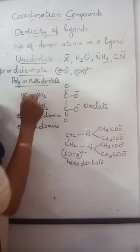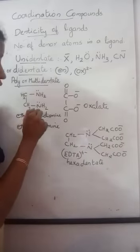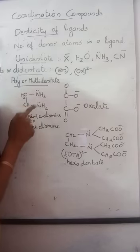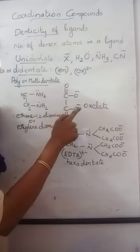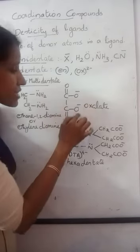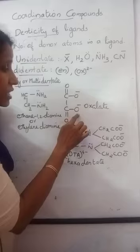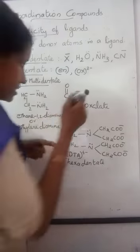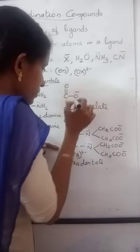There are two nitrogen atoms with lone pair electrons. So two donors are there. One, two. Hence it is bidentate ligand. Then oxalate ion. Oxalate ion also has two negative oxygen atoms. These two oxygen atoms are the donor sites. Each oxygen carrying three lone pairs of electrons.